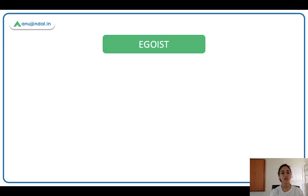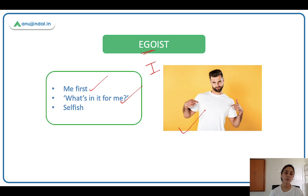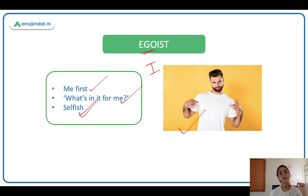So the first word is egoist. Who is an egoist? An egoist says 'me first.' The word ego is concerned with I, me, myself — what's in it for me? If you ask them for help, they will ask 'what do I get?' They will help you only if they get something in return. These people are very selfish; they'll be nice to you only if there's something in it for them. Such people are called egoists.